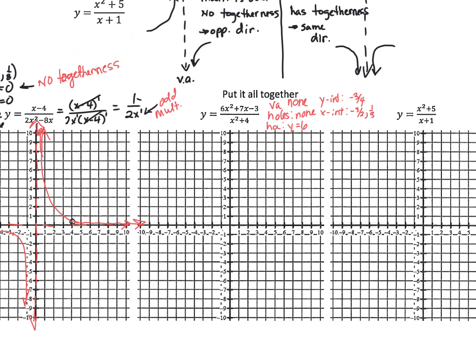Since I don't have a vertical asymptote, I don't need to worry about togetherness, and I have no holes. The horizontal asymptote is at y equals 6. I have a y-intercept at negative 3/4, an x-intercept at 1/3, and one at negative 3/2. Both have a multiplicity of 1, so they cross. The graph goes through these points, comes down through the y-intercept, back up, crossing both x-intercepts, and follows the horizontal asymptote.